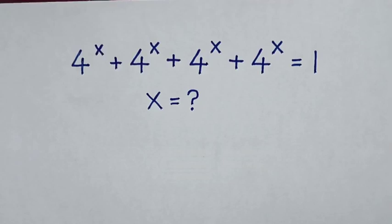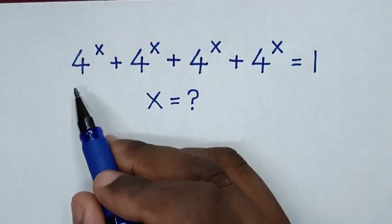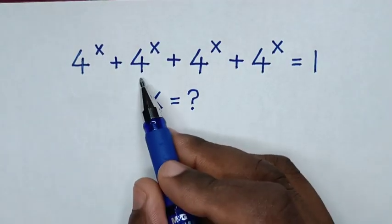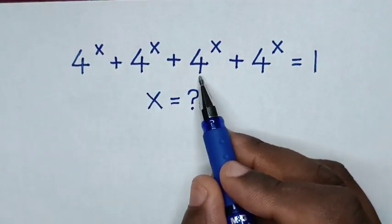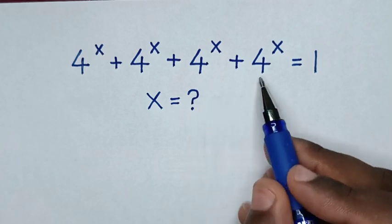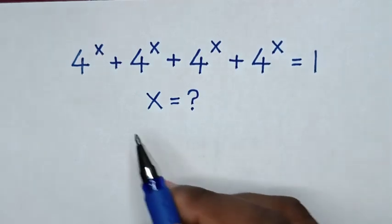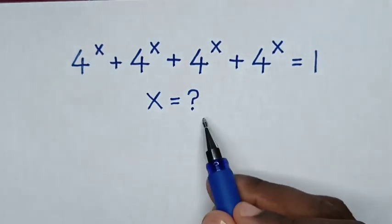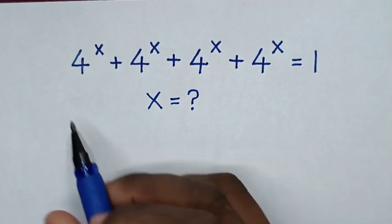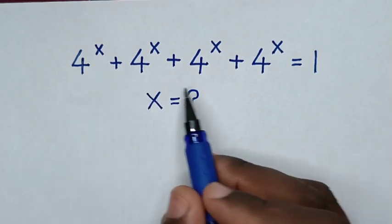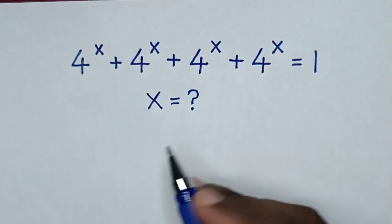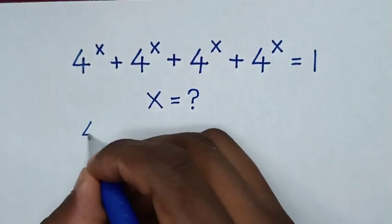Hello! How to solve 4 power x plus 4 power x plus 4 power x plus 4 power x is equal to 1 — to find the value of x from this equation. From here, 4 power x is common, so I take 4 power x out of the bracket.